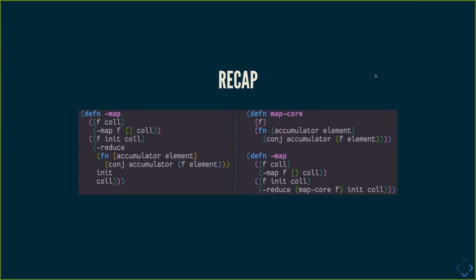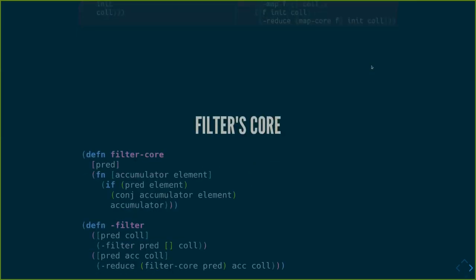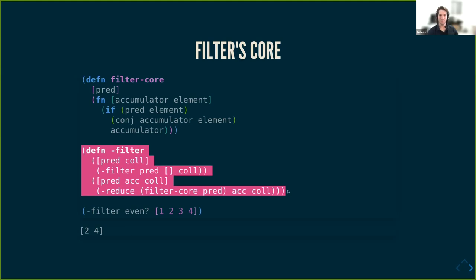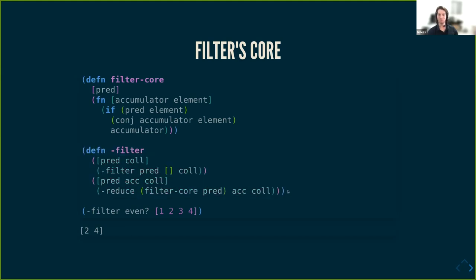Good so far. Now, the same refactor with filter — we pull out the reducing function, we turn the predicate into an argument instead of closing over it, and we gain the same-looking implementation.